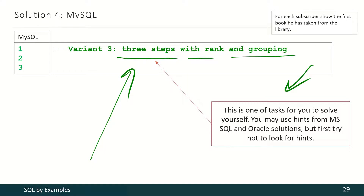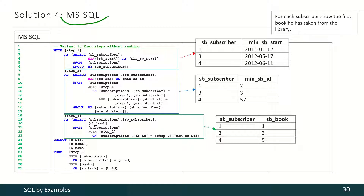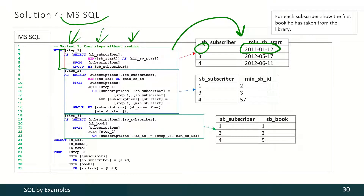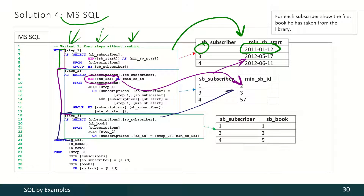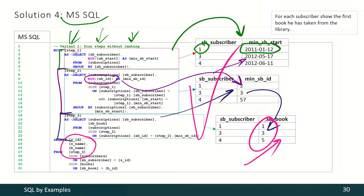For Microsoft SQL Server we also have several variants of solutions. In the first one, we use four steps without ranking. The first CTE produces, for each subscriber, his first visit date to the library. With the second step, knowing that date, we find the minimal value of a subscription made during that date. On the next step, knowing those subscription IDs, we transform them into book IDs. And on the final step we transform those IDs into book titles. That's the final result.